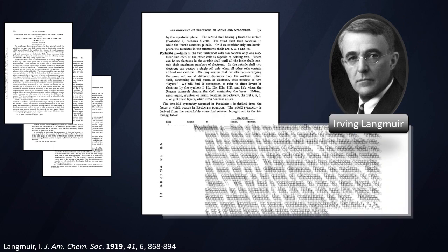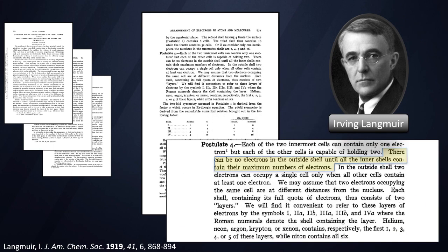Here he says, there can be no electrons in the outside shell until all inner shells contain their maximum numbers of electrons. Now those maximum numbers are 2 for the first, 8 for the second, 18 for the third, and 32 for the fourth.